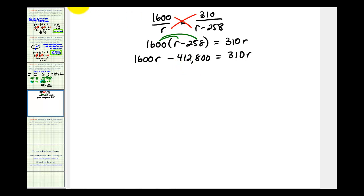We need to have r on one side of the equation. Let's just say we prefer to have r on the left side, so we'll subtract 310r on both sides. At the same time, let's go ahead and add 412,800 to both sides of the equation.